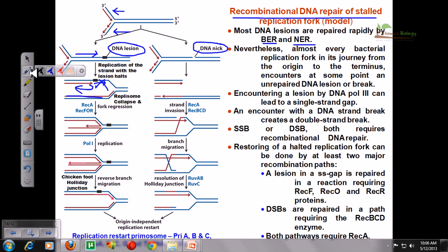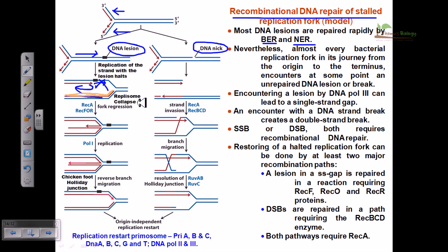This is a newly synthesized strand here, and this is also a new one. The new red-colored strand, as it senses the DNA lesion, utilizes the opposite orange-colored newly synthesized DNA strand as its template — as you can see in this picture — to synthesize DNA segments continuously in the reverse direction from where they began their journey, utilizing the newly synthesized opposite strands as their template strand.